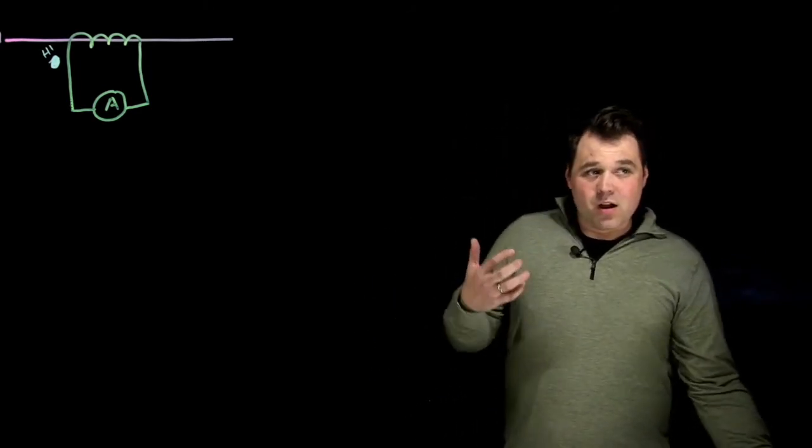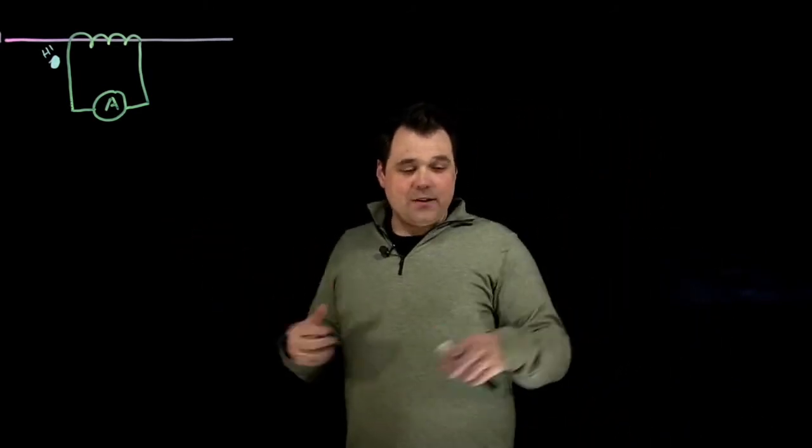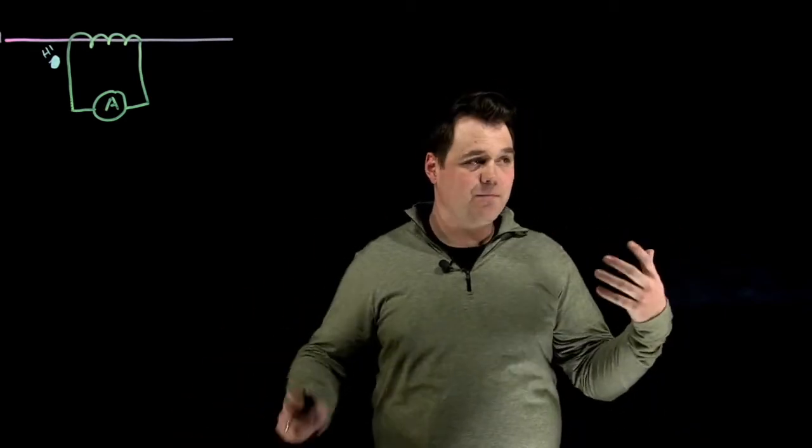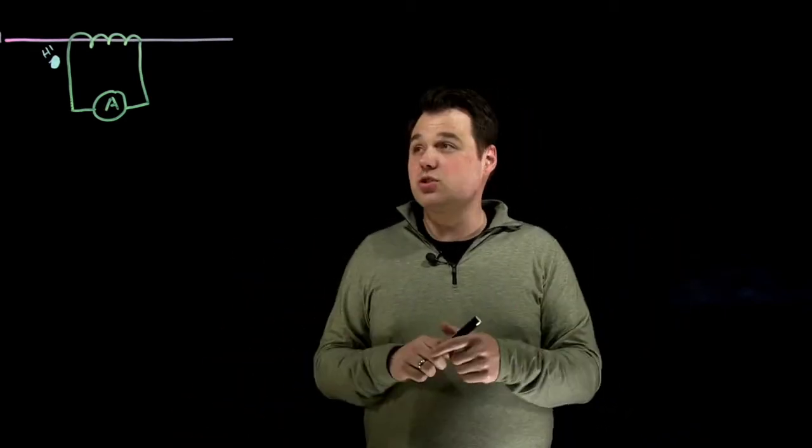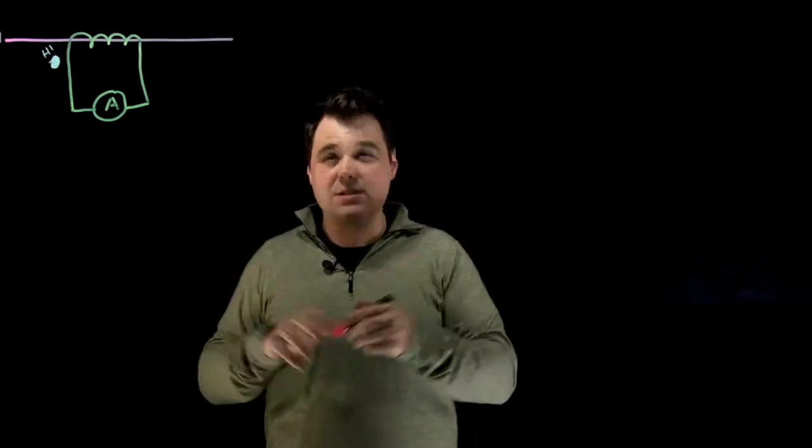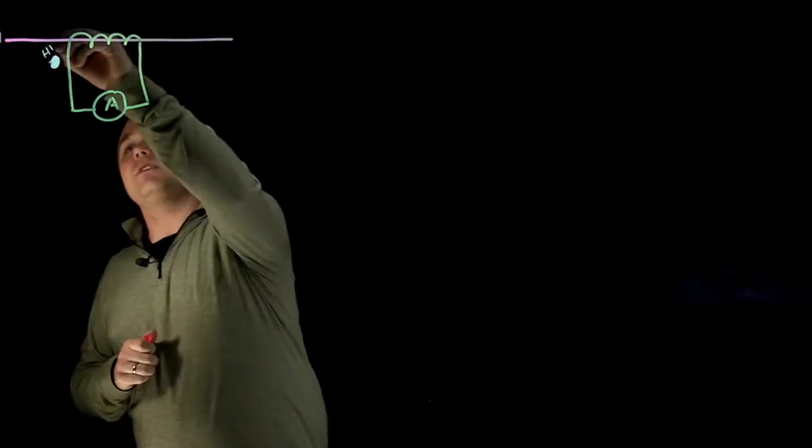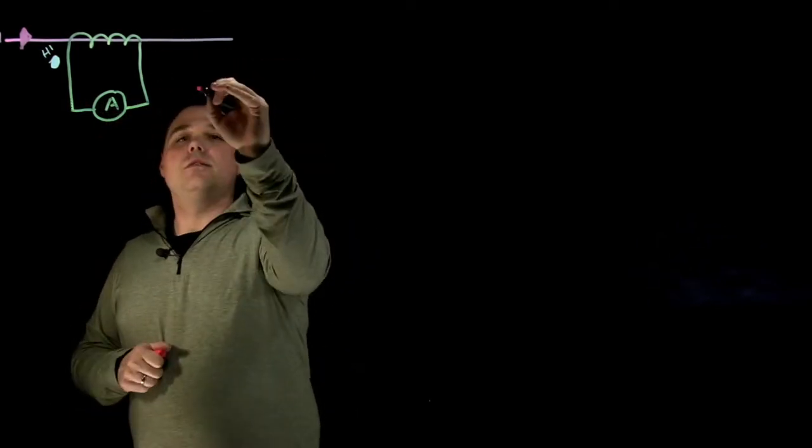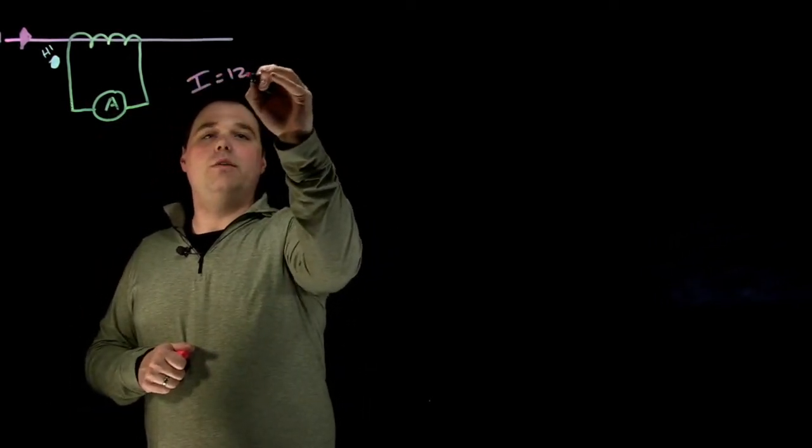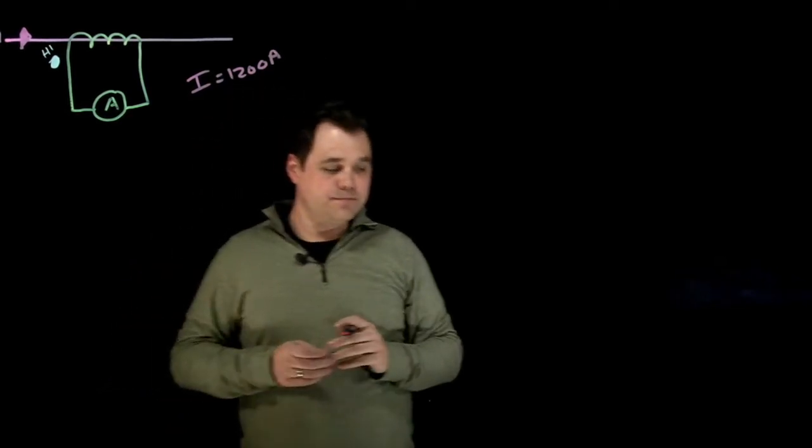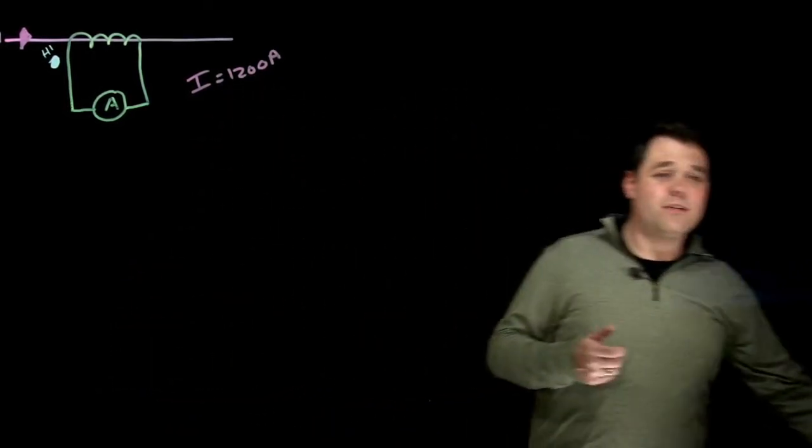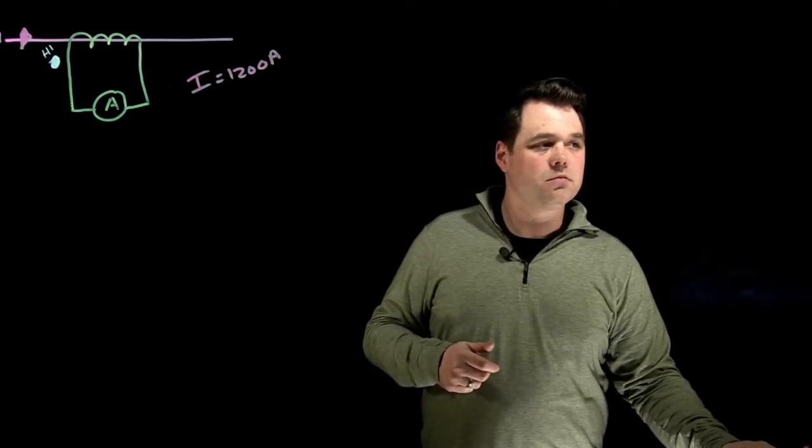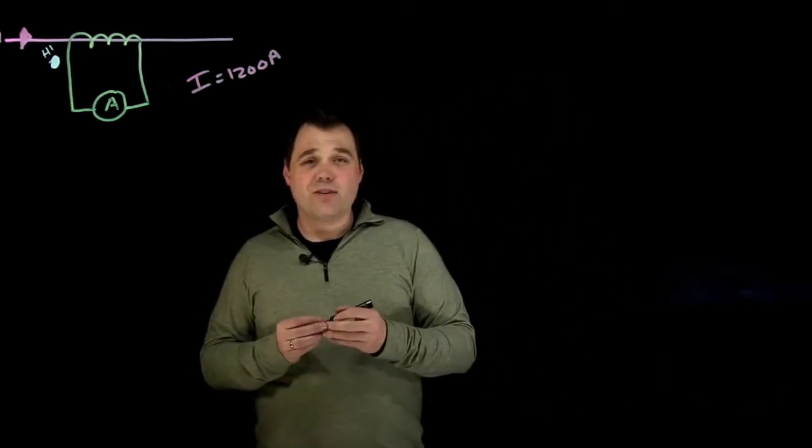Now, I install that perfect. How does it work? Well, like I said, it'll have some type of rating. So let's say in this circuit, maybe this is a main service, and maybe the rated current on this is actually 1200 amps. So 1200 amp rating.